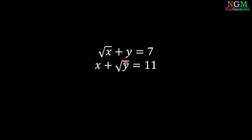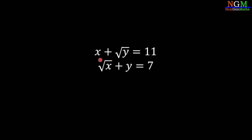In the first step, we interchange both equations. That means we write the first equation as x plus root y equals 11, and the second equation as root x plus y equals 7.